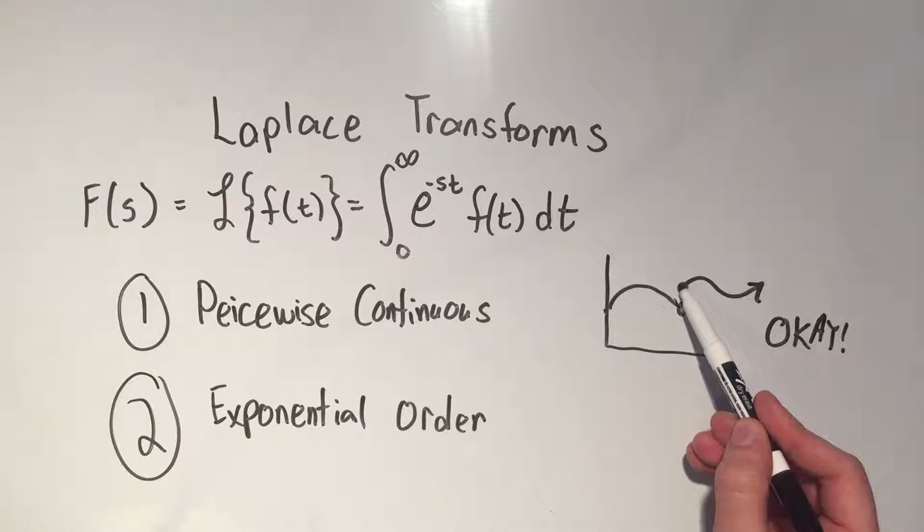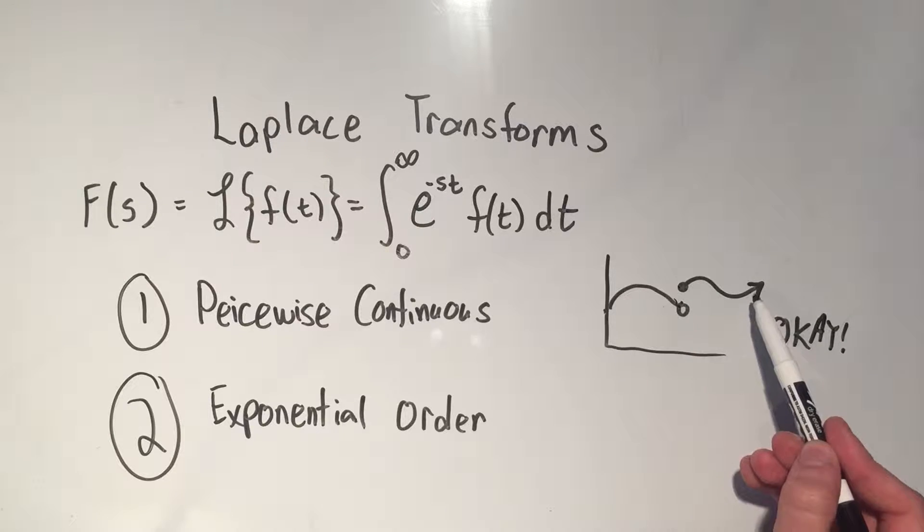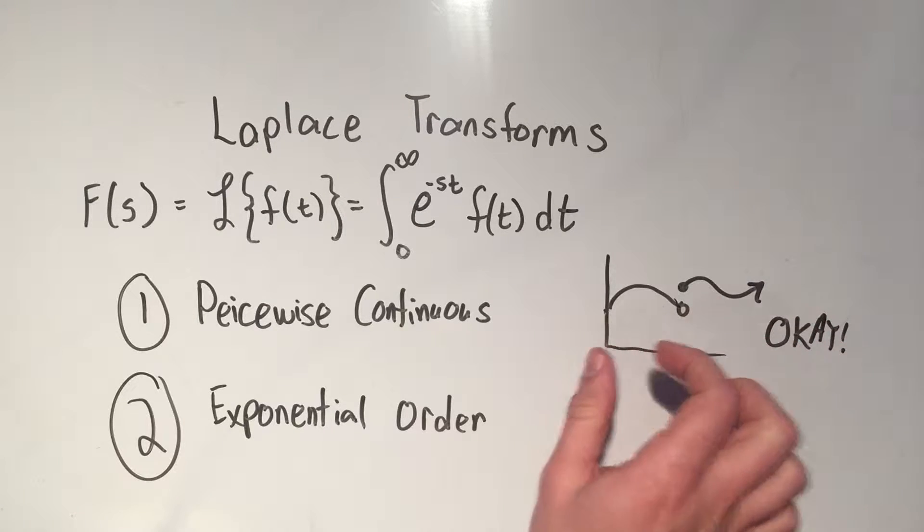So if your function looks like this and then it jumps, that's a discontinuity, but that's okay. We call that piecewise continuous because each piece is continuous by itself.